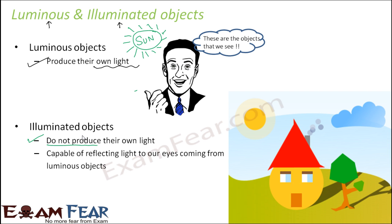The best examples of luminous and illuminated objects from nature are the sun and the moon. The sun produces its own light, so the sun is a luminous object. But the moon does not generate any light of its own — what it does is reflect the light produced by the sun. That is why on a full moon night, the moon appears to produce a lot of light, but that light is actually produced by the sun and reflected by the moon. So the moon is an example of an illuminated object.